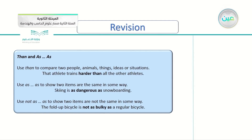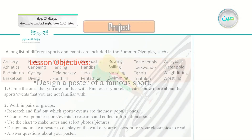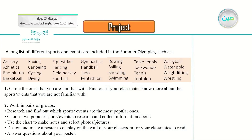So today's objective for the project: design a poster of a famous sport. A long list of different sports and events are included in the summer Olympics, such as: archery, athletics, badminton, basketball, boxing, canoeing, cycling, diving, equestrian, fencing, field hockey, football, gymnastics, handball, judo, pentathlon, rowing, sailing, shooting, swimming, table tennis, taekwondo, tennis, triathlon, volleyball, water polo, weightlifting and wrestling.